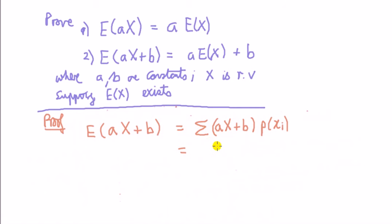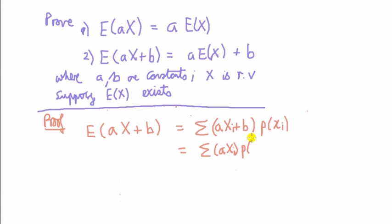I'm just going to use the summation sign. I put xi — I should put xi. And also, that big X is supposed to be a little x. Not that it matters in an introductory course.